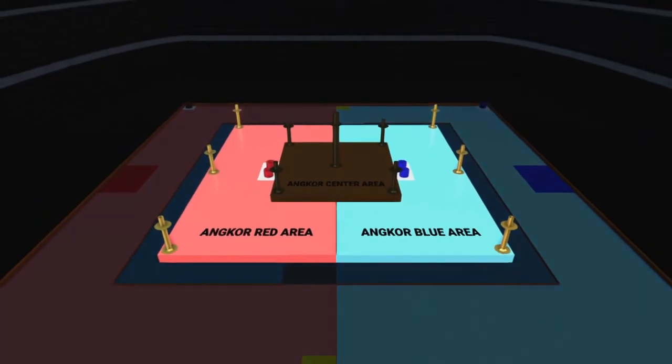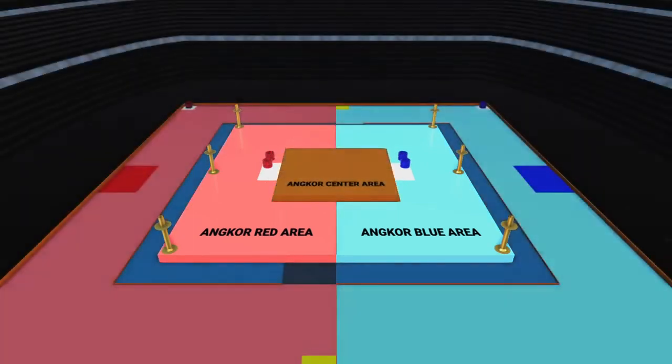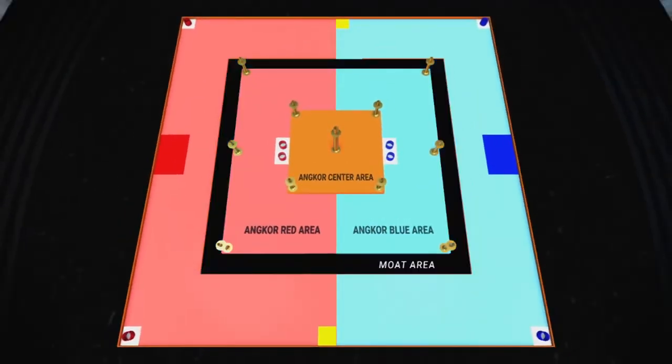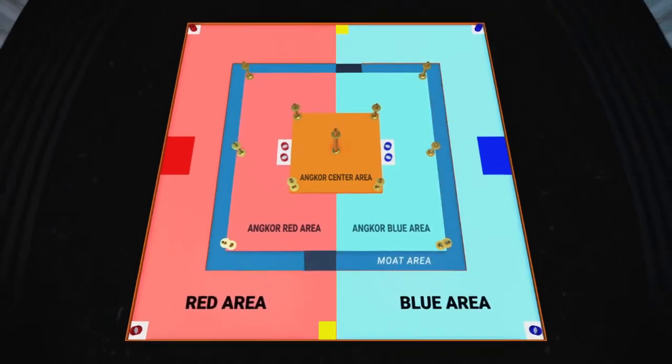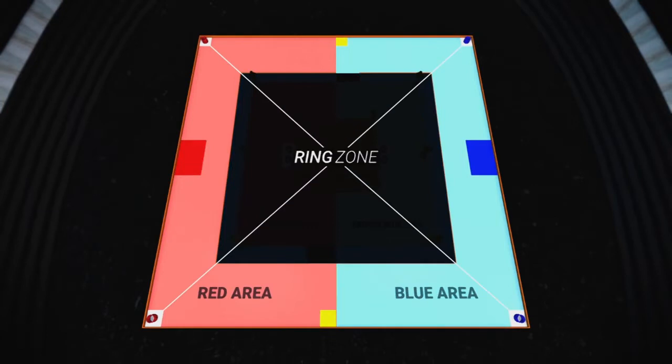Inside the Angkor Red area and Angkor Blue area, there are three poles, which are Type 1 poles, and two ring zones next to the Angkor Center area. The Angkor Red area and Angkor Blue area is surrounded by the moat area, which is connected to the red area and blue area with two bridges. Inside of red area and blue area, each has start zone, retry zones, and two ring zones.